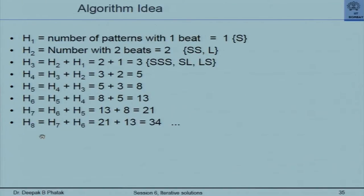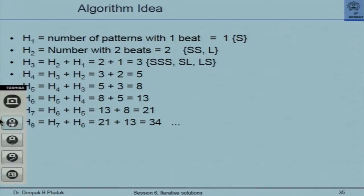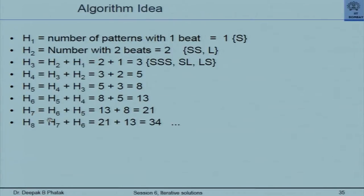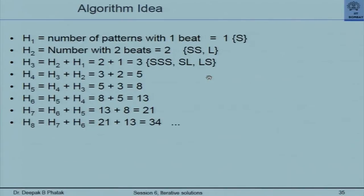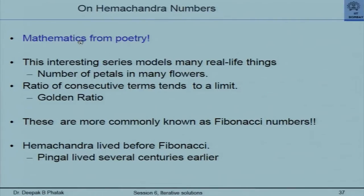In each formulation, once I calculate the present value, that present value becomes the immediate previous value and the previous value becomes the one before that, and the iteration carries on. I will agree that the explanation of H-prev, H-current, and H-next did not go easily using slides alone. In subsequent years I would go to the whiteboard and explain by showing two boxes for the previous and very-previous and next values, showing how iteratively you change these values. The program itself is not very difficult. This is mathematics from poetry.